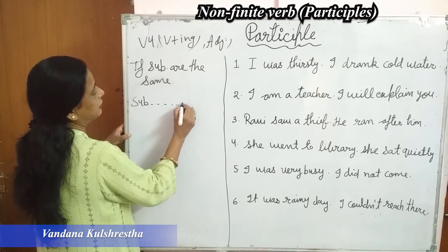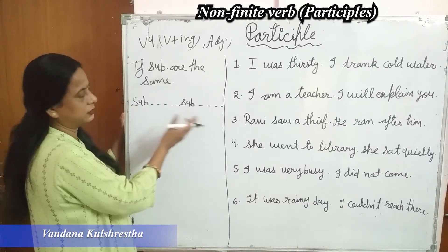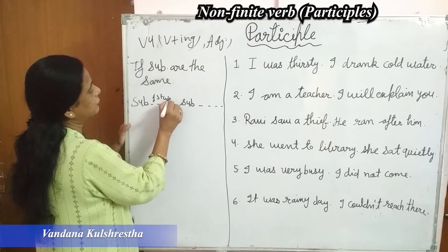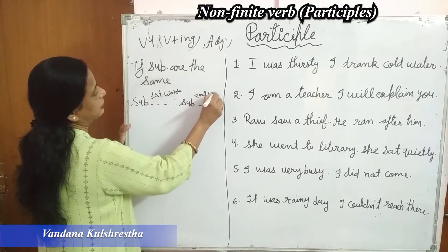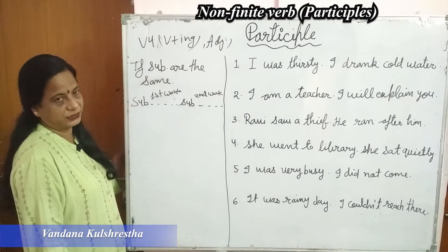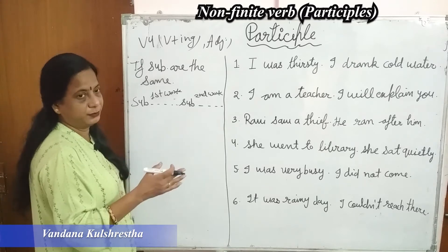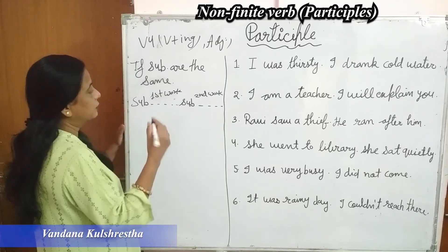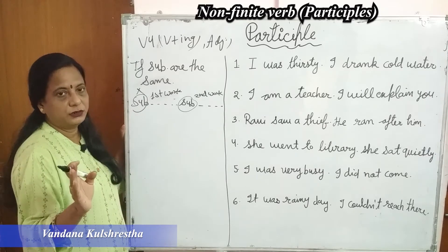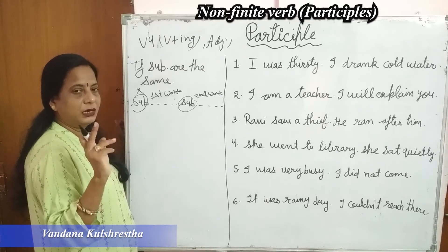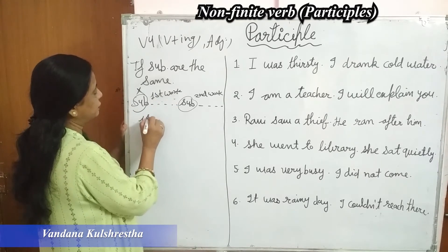If we have two clauses: first subject with first action, and second subject with second action — and the subjects are the same — then when you convert into participle, you remove the subject. No need to use the double subject. You remove the subject, and then the first action is converted by adding -ing.